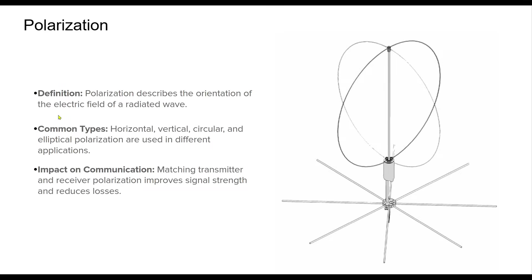Polarization is a key factor in antenna performance, referring to the orientation of the electrical field of a transmitted wave. The most common types are horizontal, vertical, and circular and elliptical polarization. HF antennas like dipoles are typically horizontally polarized, while VHF and UHF antennas, including those for handheld transceivers and repeaters, are often vertically polarized. Matching the polarization of the transmitter and receiver minimizes signal loss. However, in real-world environments, multipath reflections can sometimes mitigate mismatched polarization losses.